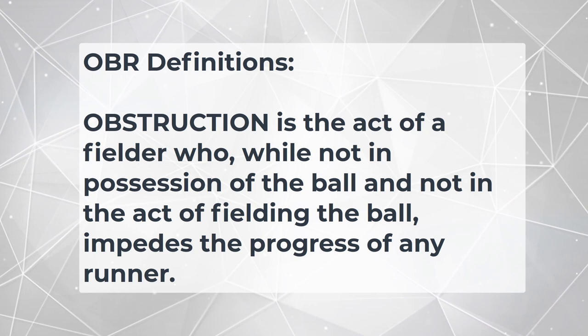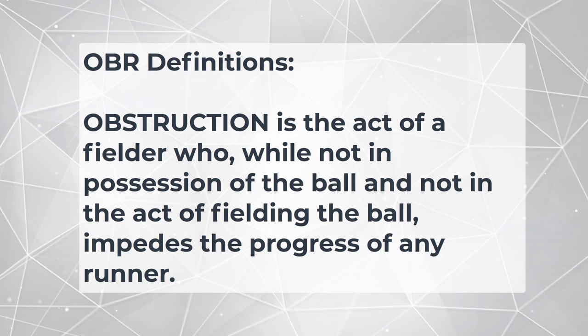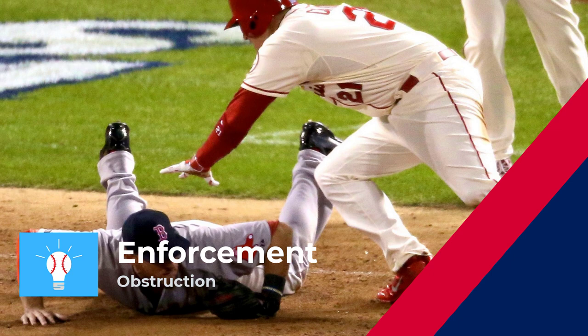Now let's quickly look at the definition under Official Baseball Rules. Obstruction is the act of a fielder who, while not in possession of the ball and not in the act of fielding the ball, impedes the progress of any runner. This lines up similarly to the start of the definition for obstruction under the NFHS rules. So let's dive into the enforcement to find those key differences I mentioned earlier.